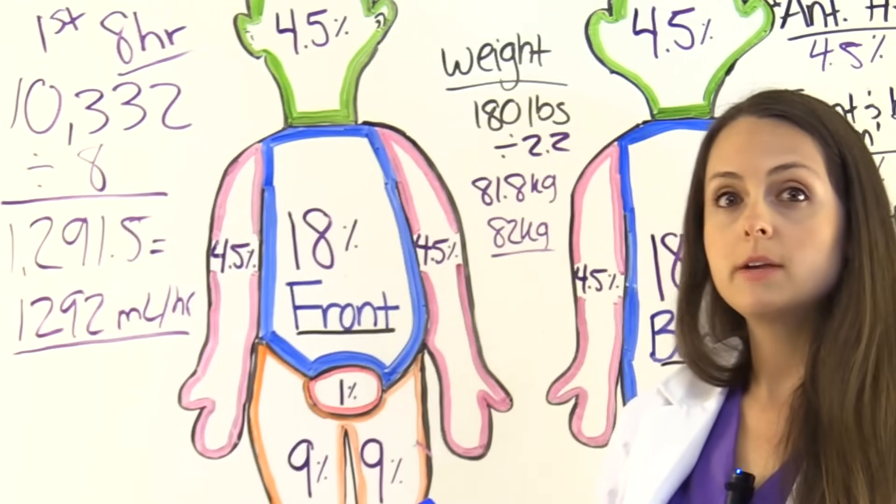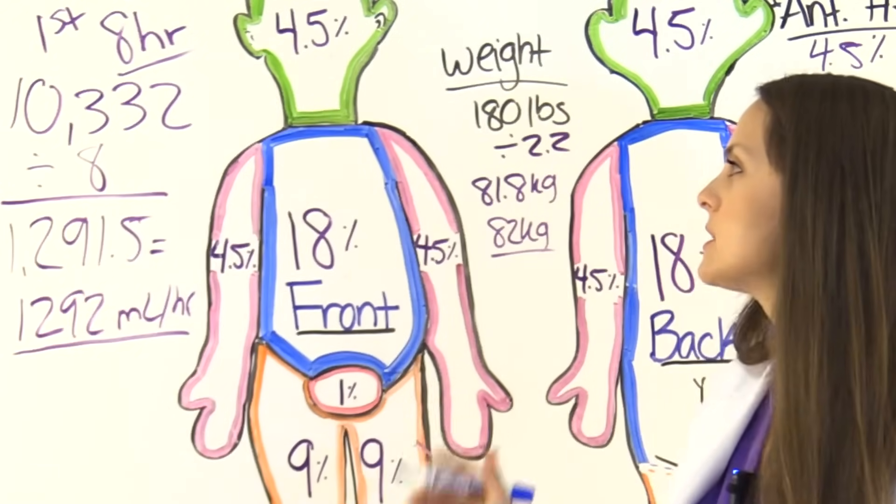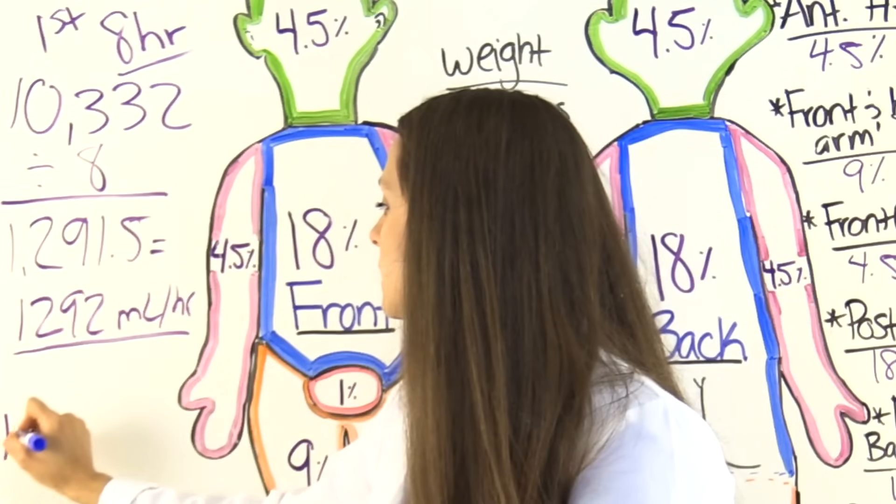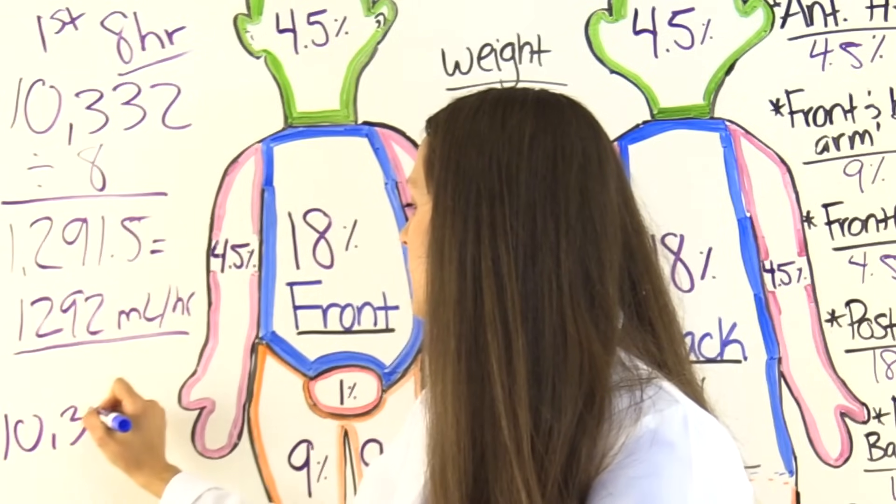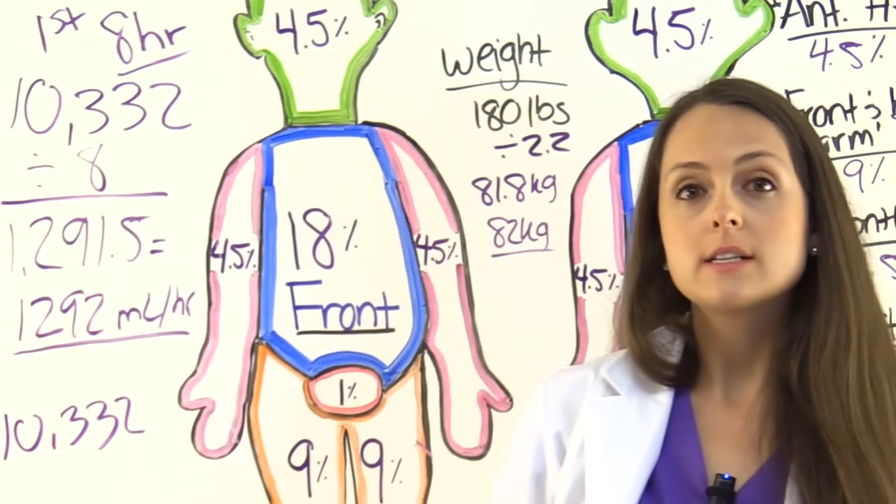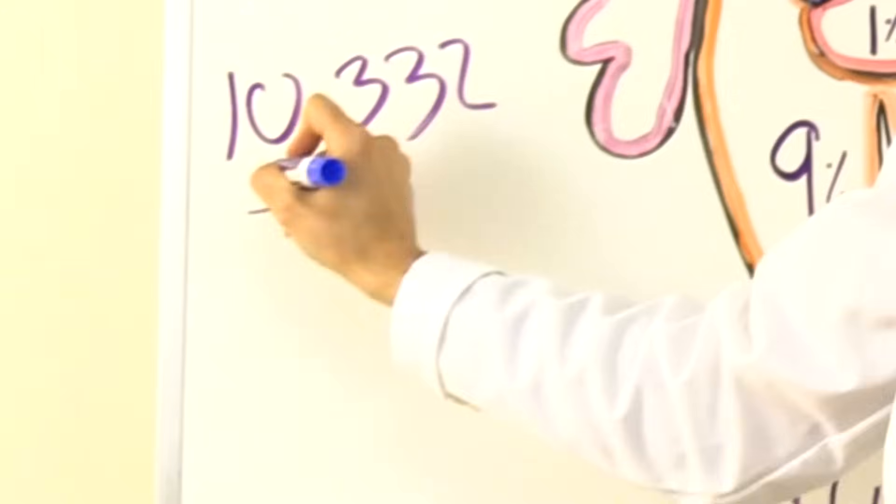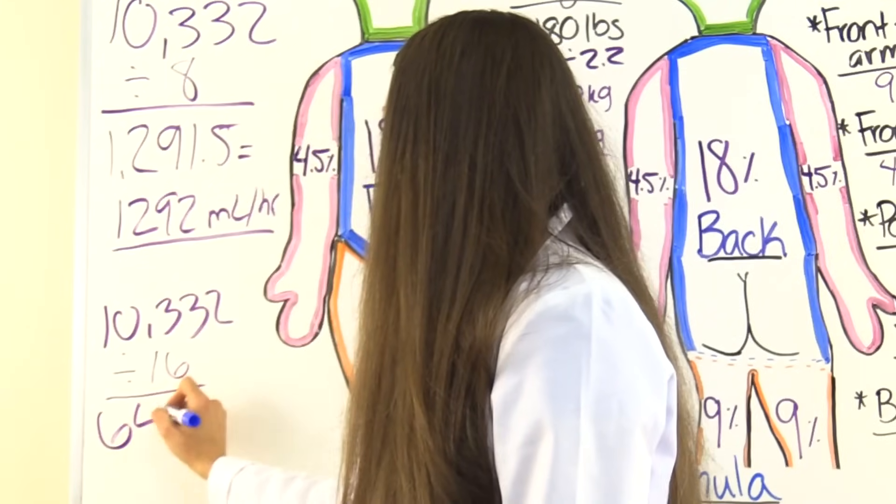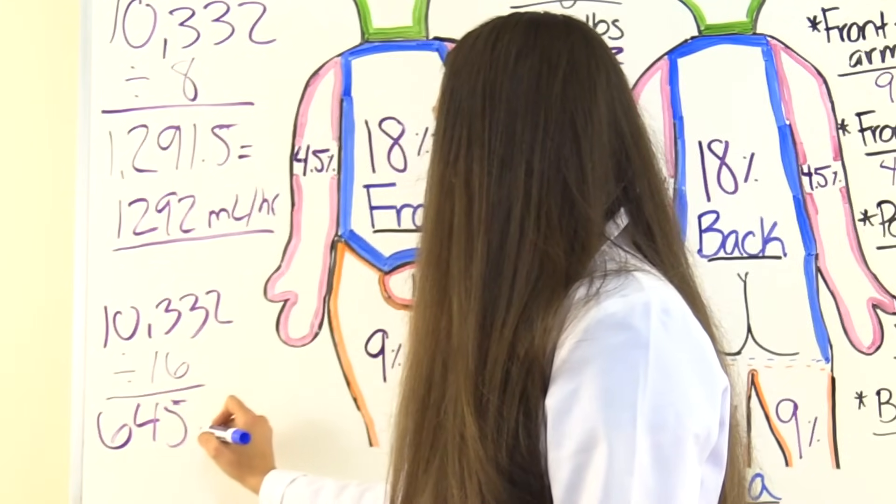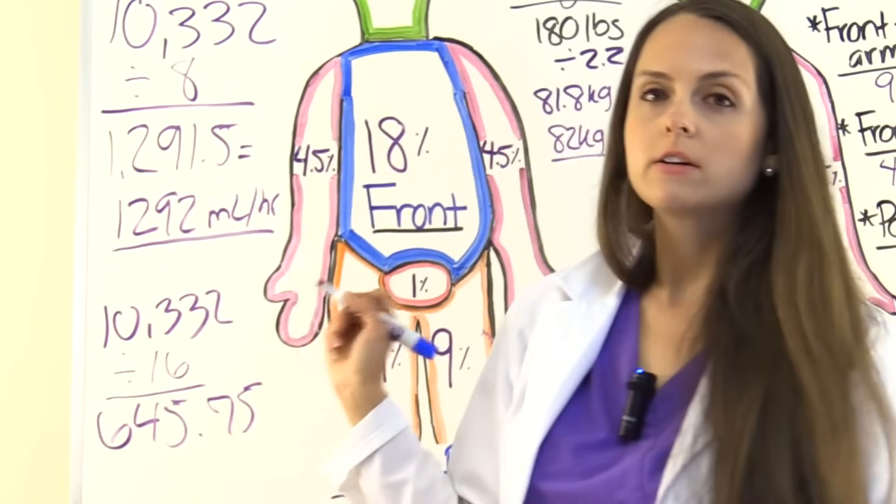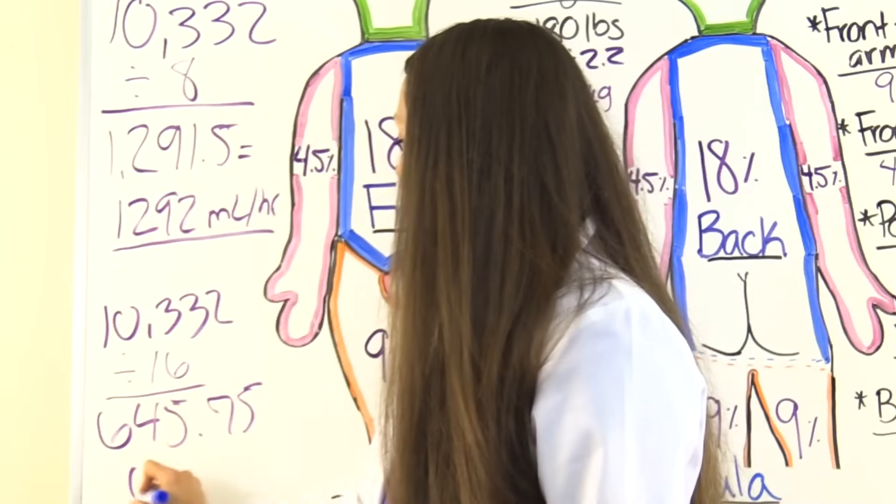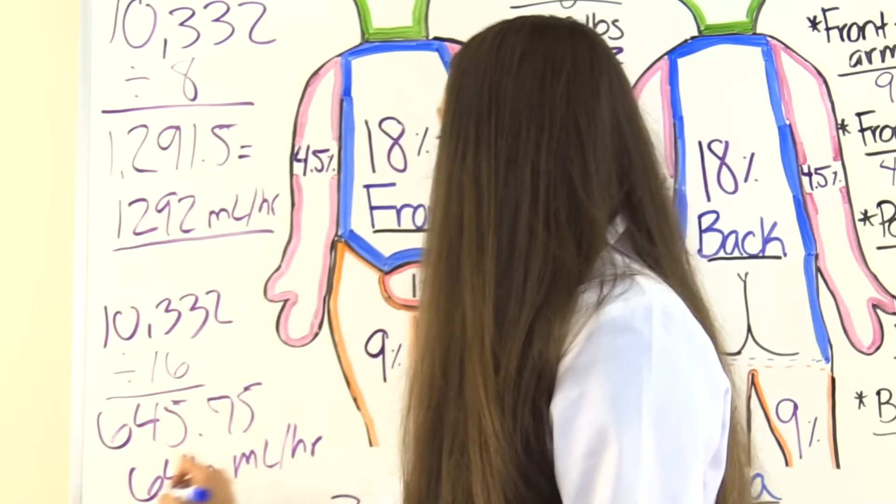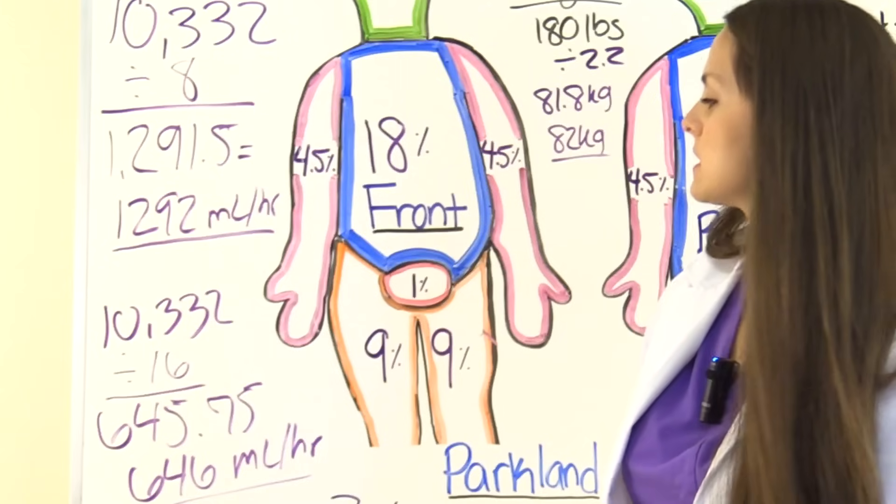Now we need to figure out what the hourly rate is going to be over the next 16 hours. So again, we're going to be giving the other half. So we'll be left with this, so 10,332. And it's going to go over 16 hours, so we're going to divide that by 16. And that's going to give us 645.75, and we're going to round to the nearest whole number. So we'll round to 646 milliliters per hour, and that's what we'll set it on over those next 16 hours.